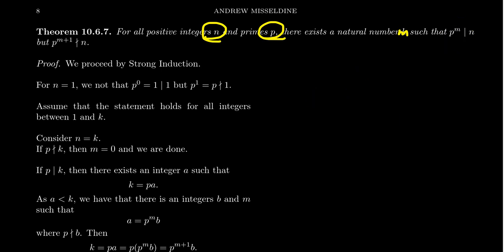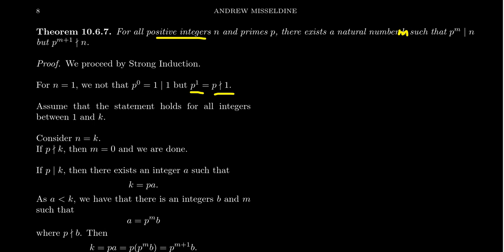We prove this by strong induction. The base case is N = 1. For any prime p, p⁰ = 1 divides 1, but p¹ does not divide 1 — no primes divide one. So the base case holds, with m = 0. Also to be clear, the prime p is fixed throughout the whole argument — it's arbitrary but fixed.